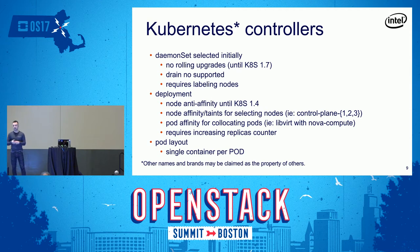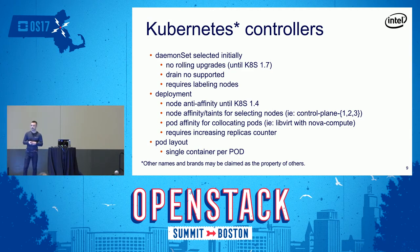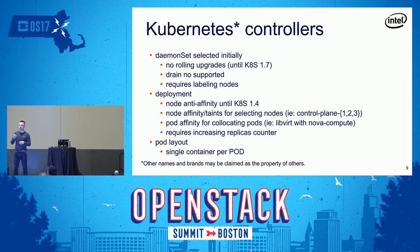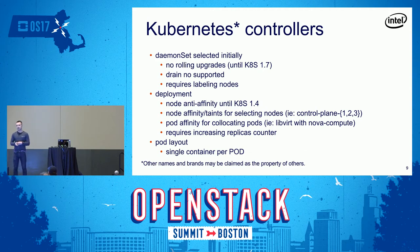There is also pod affinity. When you look at Nova Compute, you usually want it to run alongside LibVirt. With pod affinity, you can tell Kubernetes that as soon as a Nova Compute pod lands on a node, also deploy a LibVirt container there. This applies to Neutron agents as well — if a Neutron Open vSwitch agent is running on a host, ensure Open vSwitch vSwitchD and Open vSwitch DB server are deployed there too.